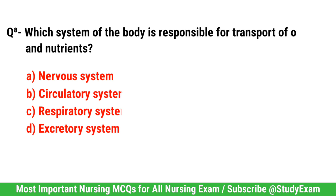Question No. 8. Which system of the body is responsible for transport of oxygen and nutrients? Correct option is B. Circulatory system.